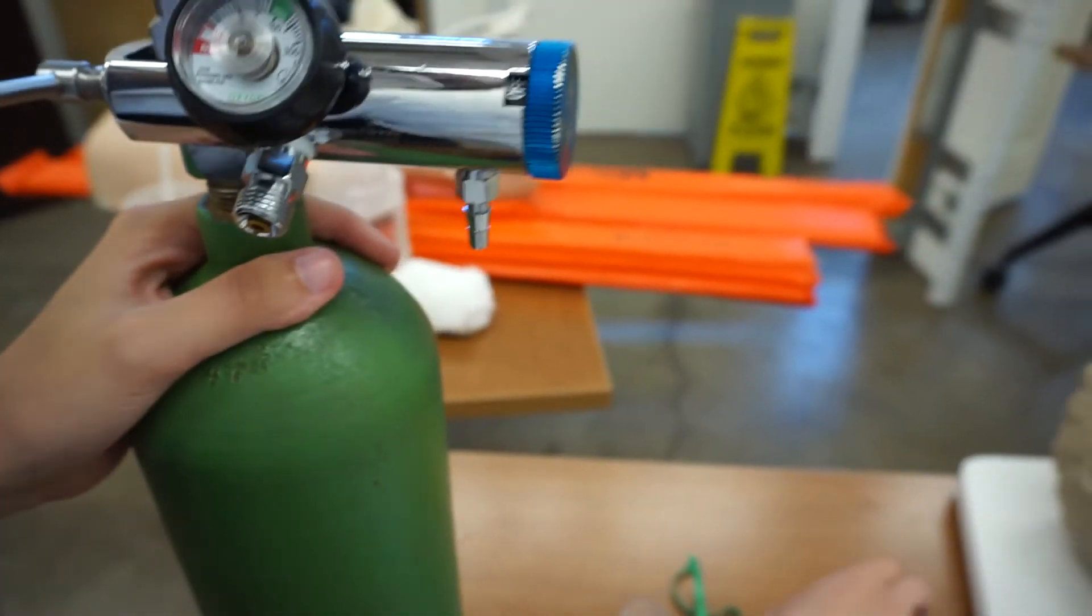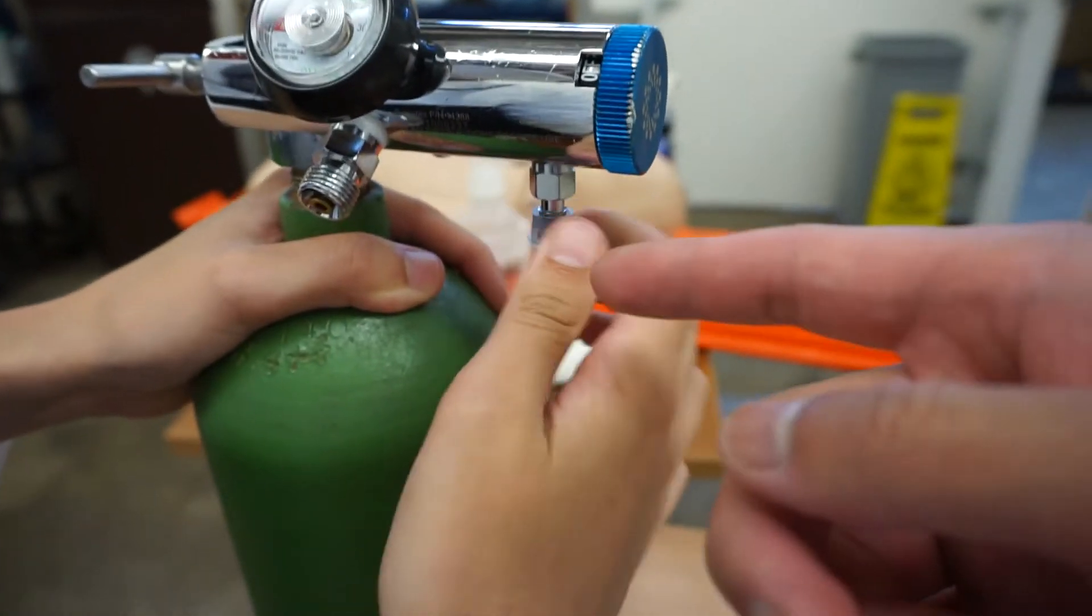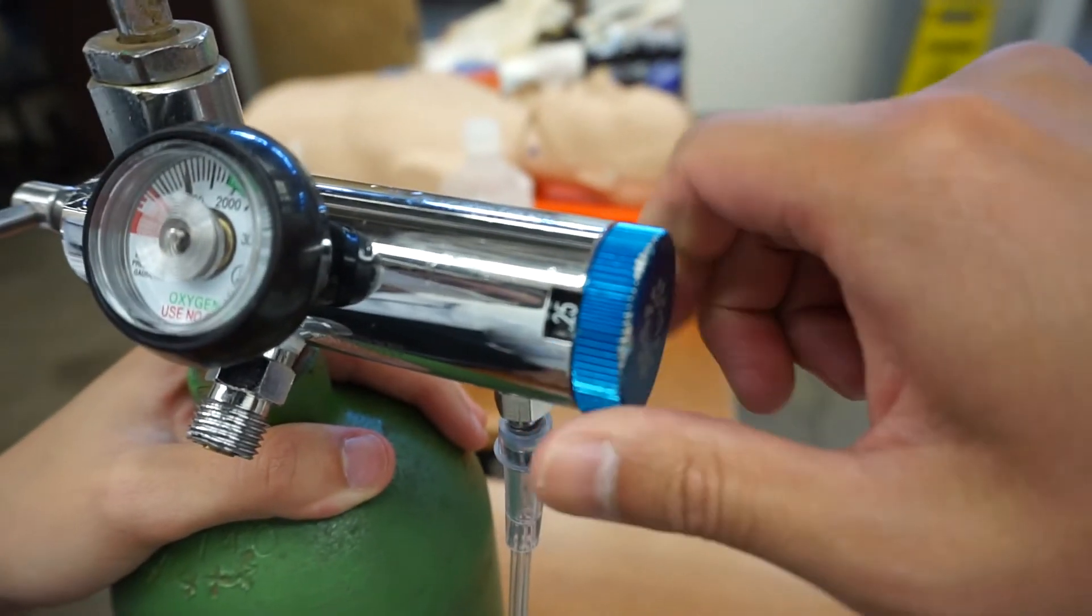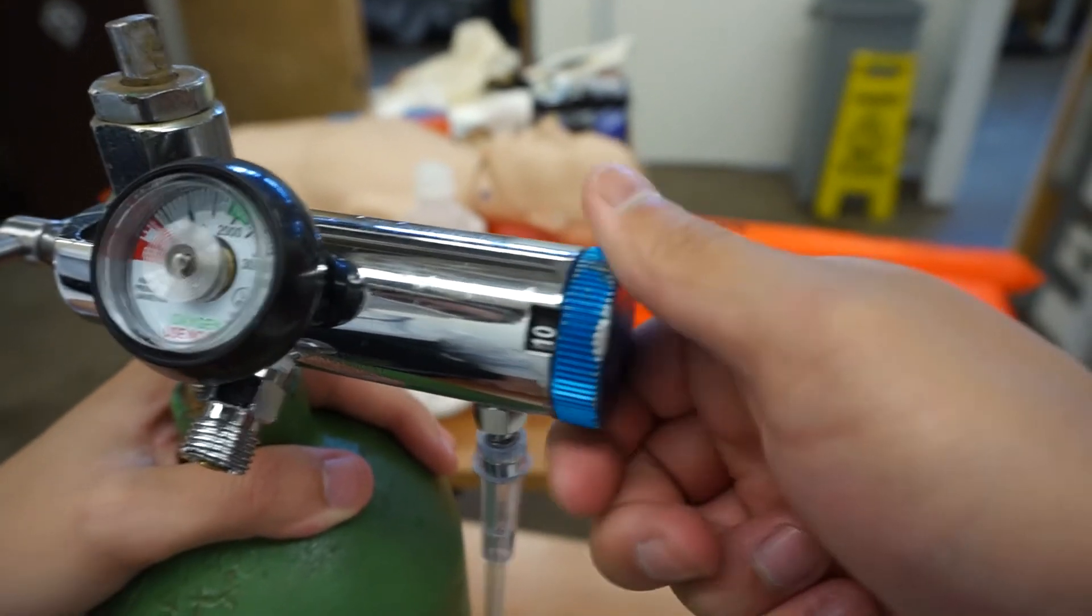And if we wanted to apply any piece of oxygen equipment, apply the tubing to this notch right here, and then you can adjust the flow rate all the way up to your designated rate.